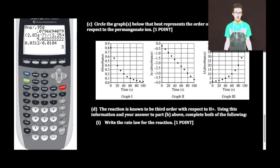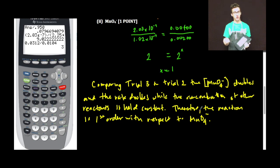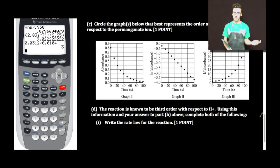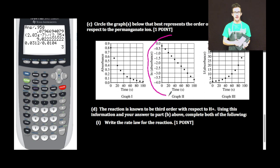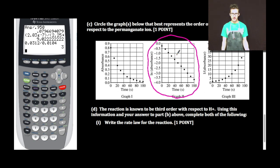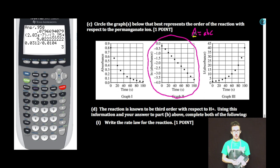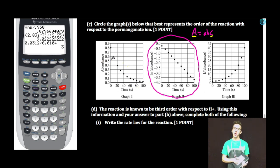Part C. Circle the graph or graphs below that best represents the order of the reaction with respect to the permanganate ion. Recall that we just determined the reaction to be first order with respect to permanganate ion. Looking at the graphs — absorbance against time, natural log of absorbance against time, and one over absorbance against time — a first order reaction gives a straight line plot when we graph the natural log of absorbance against time. You might say that it should be natural log of concentration, but Beer's Law relates absorbance to concentration: as concentration increases, so does absorbance, so you can also plot absorbance against time.